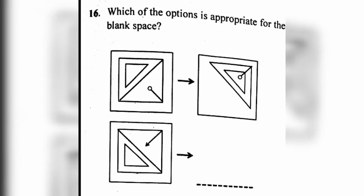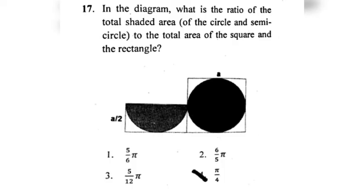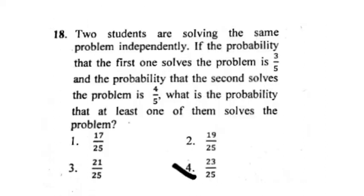This is question number 16, which is also very easy — fill in the blanks — and the right option is option number 2. The 17th question of Booklet A is about the total area of a square and rectangle, and the right option is pi by 4, option number 4.